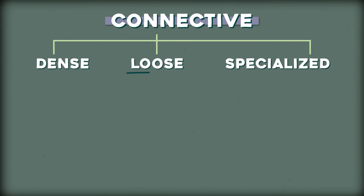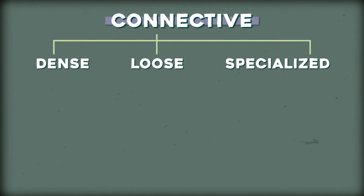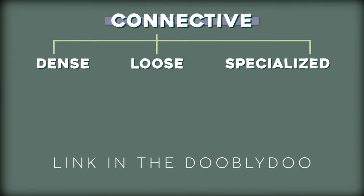In general, we can split connective tissue into three categories: loose proper, dense proper, and specialized. We're going to build on this flowchart over the course of the video, and if you want it as a study guide, there's a copy link down in the description.